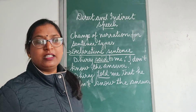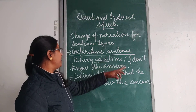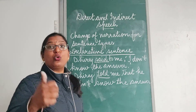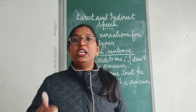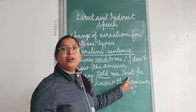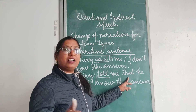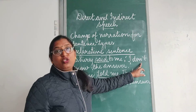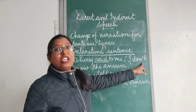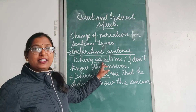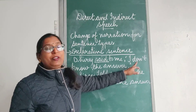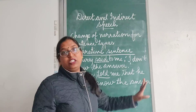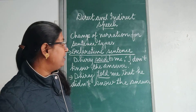The second rule: consider the sentence 'Dheeraj said to me, I don't know the answer.' The quoted speech is 'I don't know the answer.' In the indirect speech, it will be 'Dheeraj told me that' — instead of a comma, we use the subordinating conjunction 'that'. 'I' will be changed to 'he', and 'don't' will be changed to 'did not', because present tense changes to past tense when the introducing verb is in simple past. So: 'He did not know the answer.'